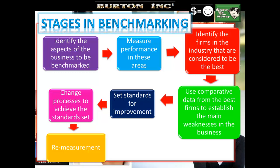Why set your targets at the best when you could be even better? Number six: change processes to achieve the standards set — this may require nothing more than a different way of performing one task, but more substantial changes may be necessary. Then re-measurement: the change to the process needs to be checked to see if new higher standards are being reached. Benchmarking is not a one-off exercise; to be effective, it should be a continuous process to achieve long-term improvements in productivity and quality.